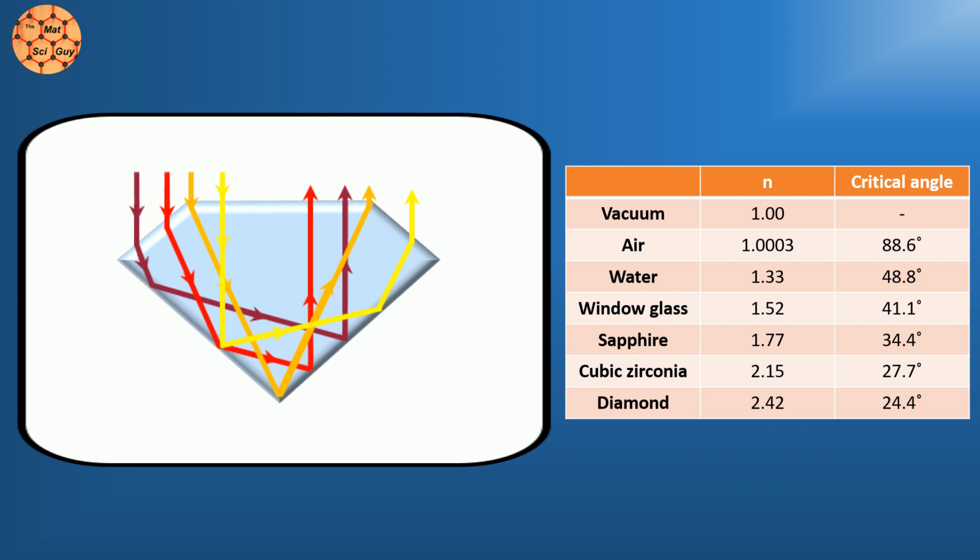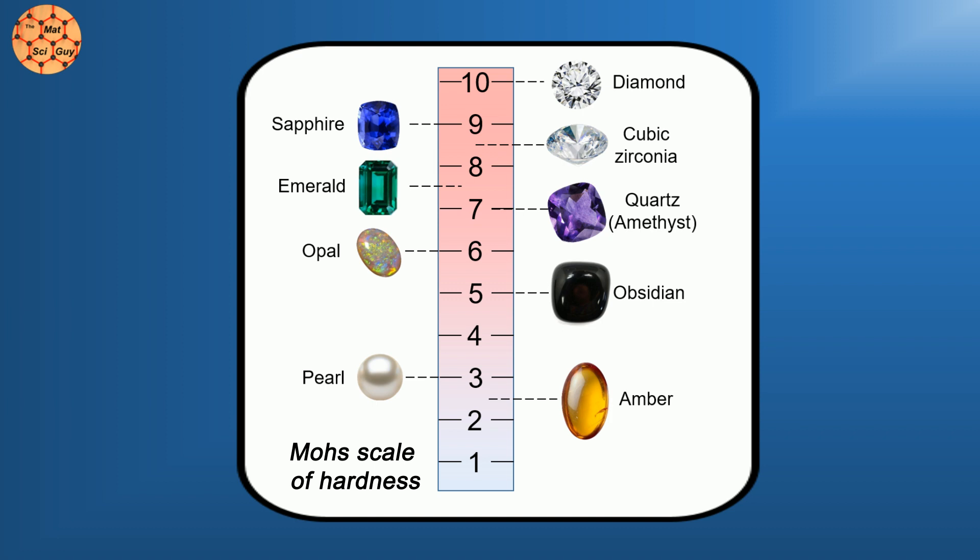But cubic zirconia's interesting properties extend beyond just the optical realm. Obviously, it's not quite as hard as diamond, but it's no slouch, coming in at a solid 8.5 on the Mohs scale.